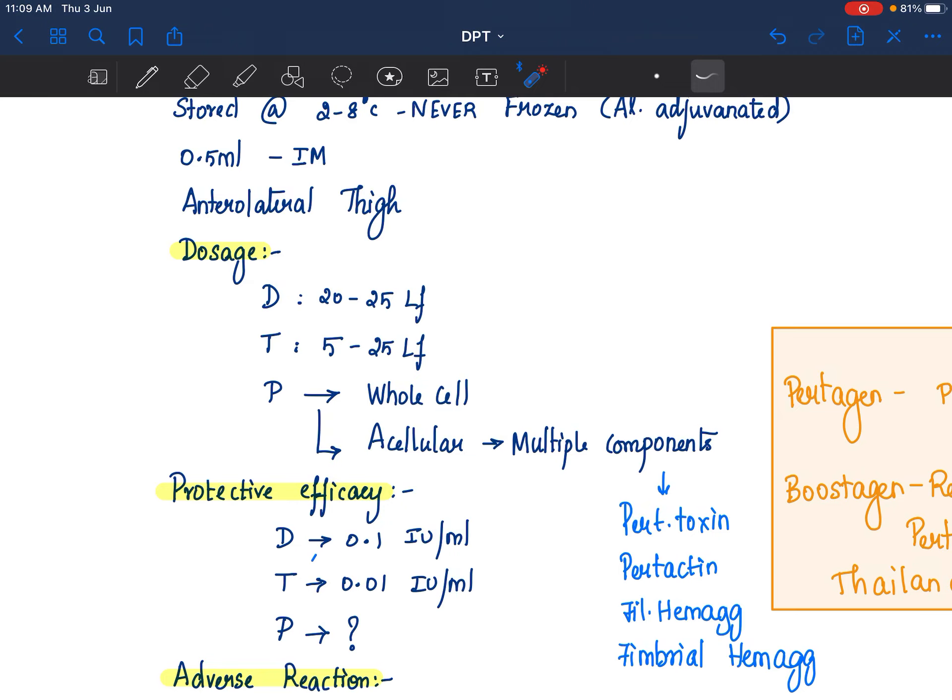For tetanus 0.01 international units per ml. For pertussis, we do not have clear correlates for protection. For acellular, it is very difficult to know because there is nothing that is established. For whole cell, there is a murine intracerebral challenge test. That is a laboratory test that is done. It is not done for routine population.